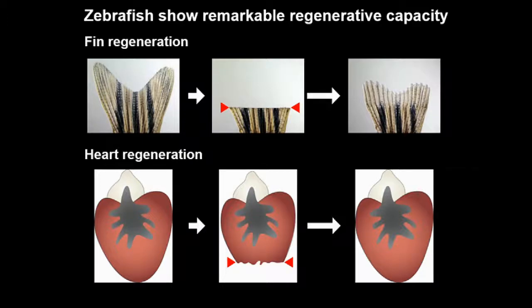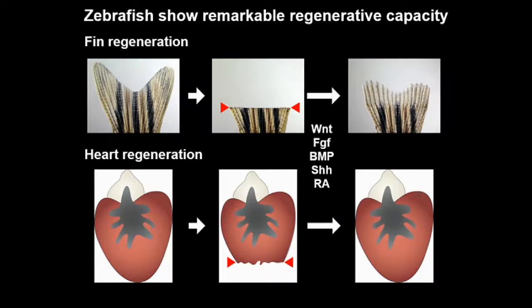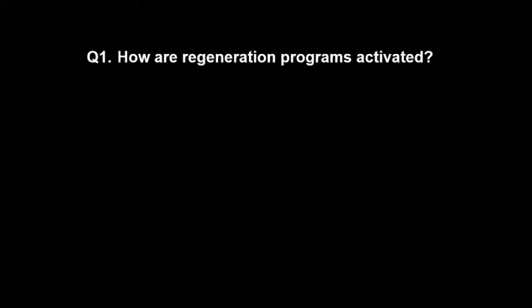Lots of studies have been done to establish the molecular blueprint of tissue regeneration. These studies have shown that injury triggers the expression of various factors, including major signaling molecules and regenerative factors. However, virtually nothing is known about how these factors are turned on during regeneration, and where are the regulatory sequences controlling their expression. Today, I'm going to address this question: how are the regeneration programs activated?